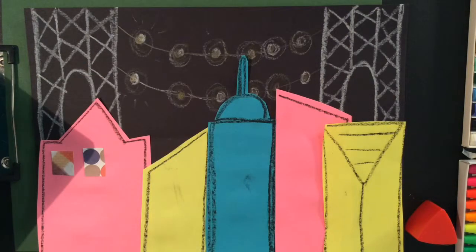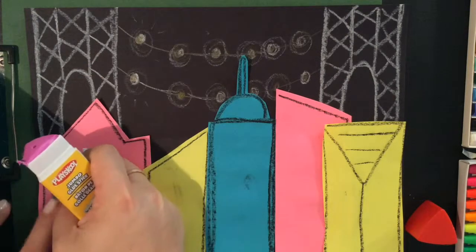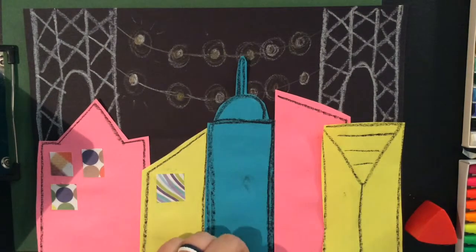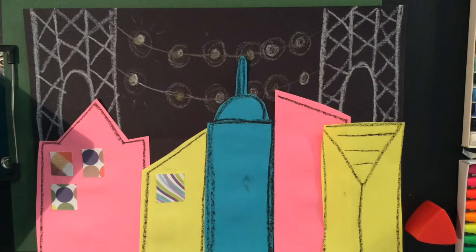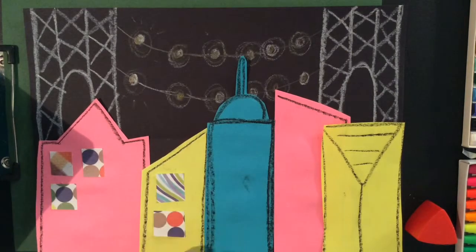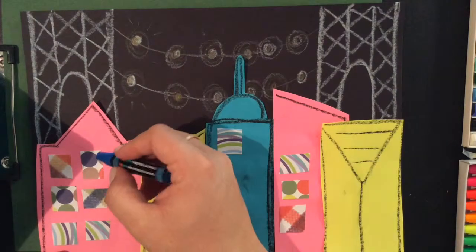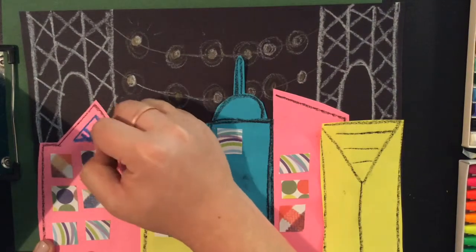Next, you're going to use some colorful paper, either as squares or rectangles, and you're going to glue those down as the windows for your buildings. You can also use oil pastels or crayons to draw out the windows and the details of the buildings and make them more interesting.